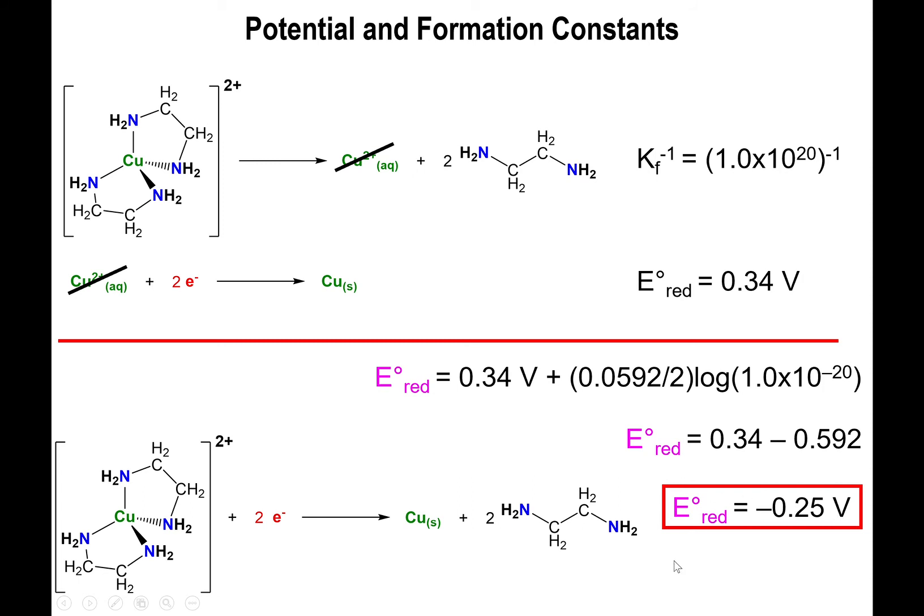And this is kind of interesting to analyze, because what this is telling you is that naked copper wants to be reduced. But the moment you add ligands to it, it no longer wants to be reduced. And the reason being is because the ligands are supplying electron density to that metal. And so you already have higher electron density around the metal. So having two electrons come in to carry out the reduction is not going to be all that favorable.